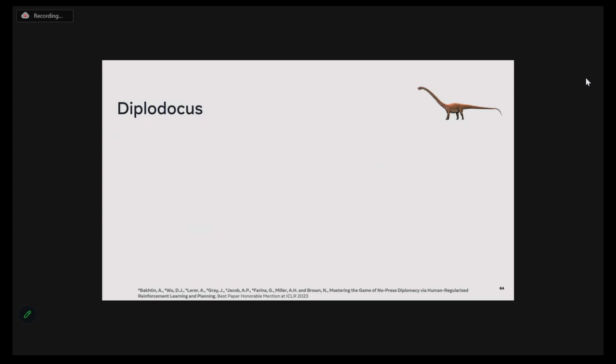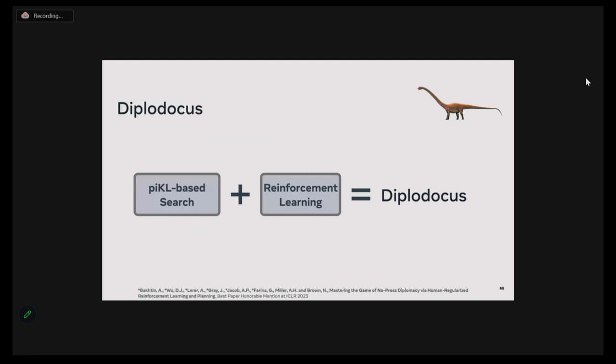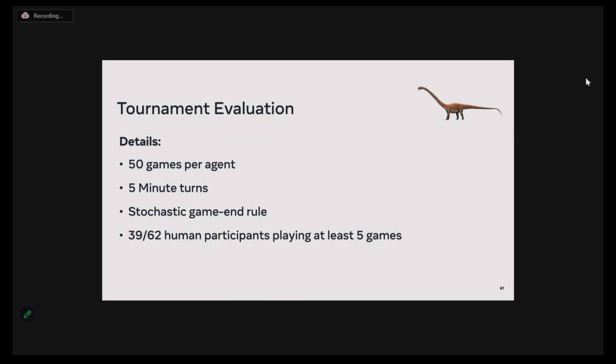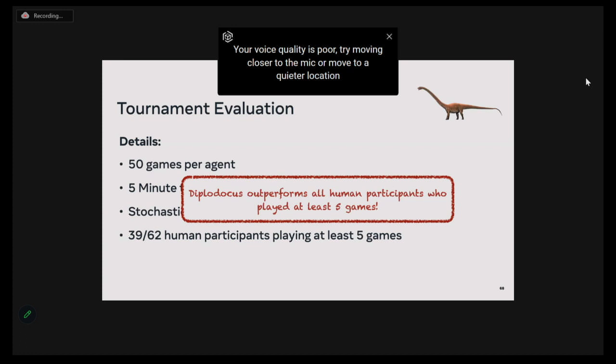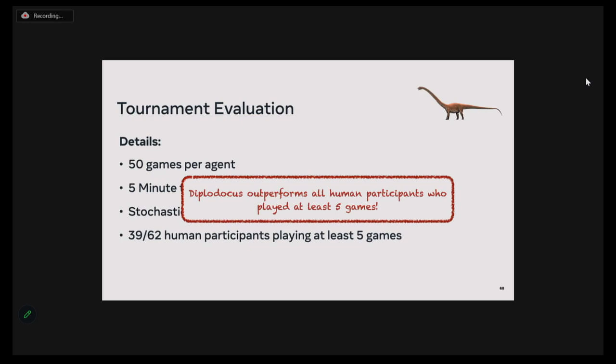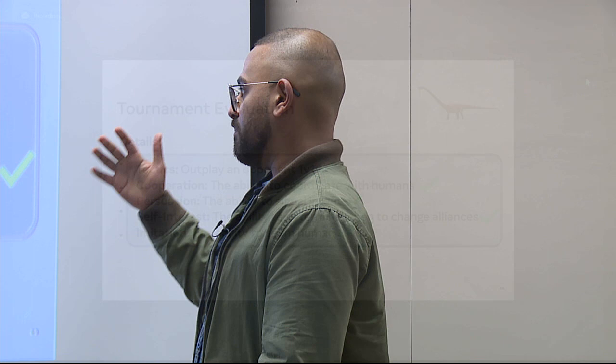That leads us to our no-press diplomacy agent called Diplodocus. It combines a PICL-based search algorithm and puts that into a self-play reinforcement learning loop. We entered Diplodocus variants into an enormous tournament featuring over 60 participants, including players of different skill levels including experts. Every game featured one of our agents and six human participants. Diplodocus was able to successfully outperform all participants who played at least five games. By leveraging equilibrium search regularized towards an imitation learned policy, as well as reinforcement learning, we built an agent that is strong on multiple fronts.